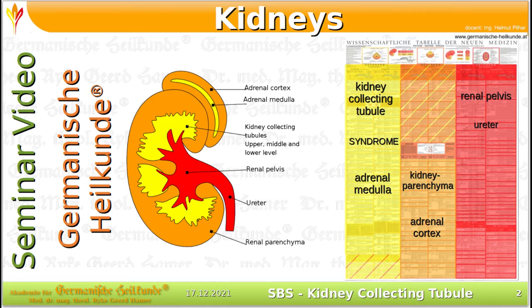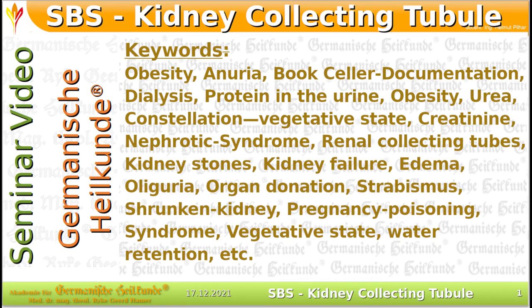Several case studies are used to make the different conflict contents, such as refugee and existential conflict, comprehensible. The objective is to be able to correctly interpret symptoms, such as obesity, water retention, waking coma, elevated creatinine level, protein in the urine, kidney stones, renal colic, kidney cancer, etc. You can learn more about this in the approximately one hour seminar video.